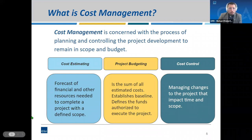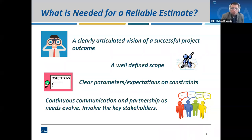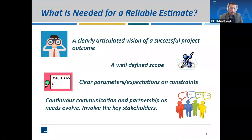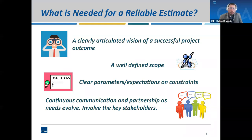What is needed for a reliable estimate? It is really important that we have a successful, clearly articulated vision. If we don't have a vision of the project, we're going to be scoping an item misaligned with what your stakeholders envision. Scope definition is critical — the more details, the fewer assumptions the estimator has to make. Knowing where the project is going to take place helps a lot. And stakeholder communication early, often, and continuous is really important. We need to calibrate estimates as needs evolve from the planning stage.